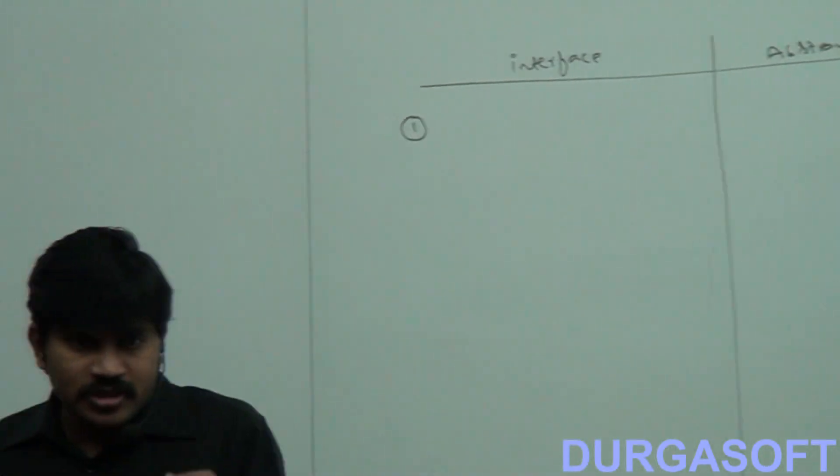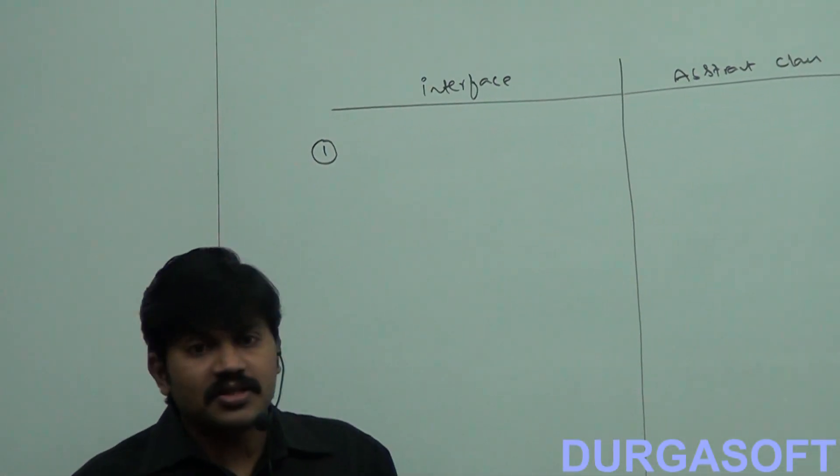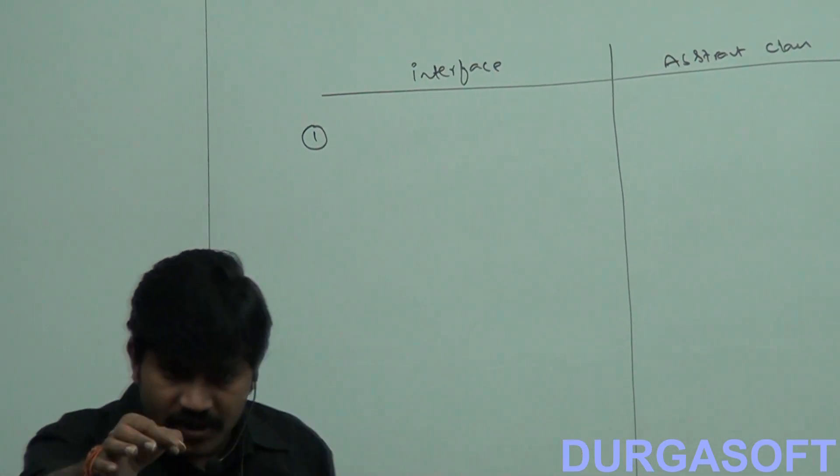First point: When should we go for interface, and when should we go for abstract class? If we don't know anything about implementation — just we have a requirement specification — then we should go for the interface concept. If we know implementation but not completely — partial implementation — then we should go for abstract class.